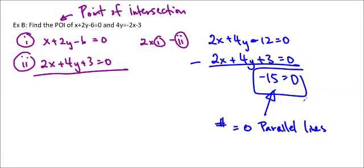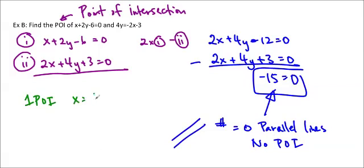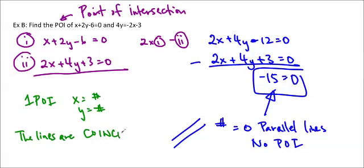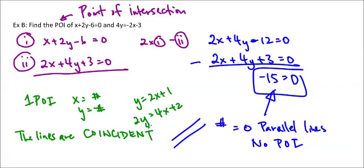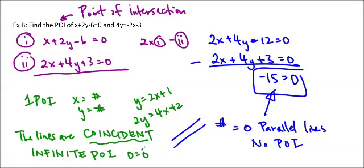So there are no parallel lines and no POI. The other outcomes are: one point of intersection — where x and y each equal a specific number, just like in example A; or all points intersect, meaning the lines are coincident — exactly the same line. For example, y equals 2x plus 1 and 2y equals 4x plus 2 are the same equation divided by 2, so they're coincident, giving infinite POI. That case gives 0 equals 0, which is always true.